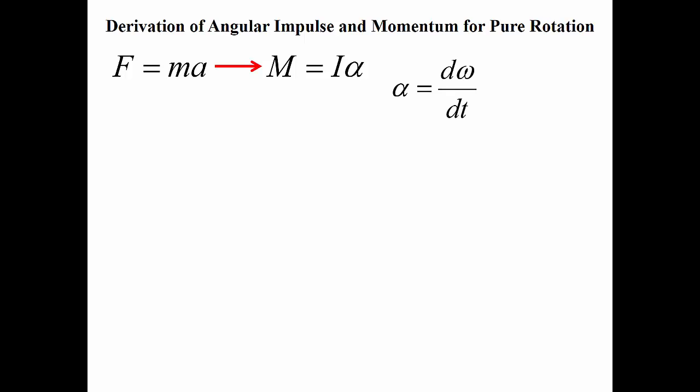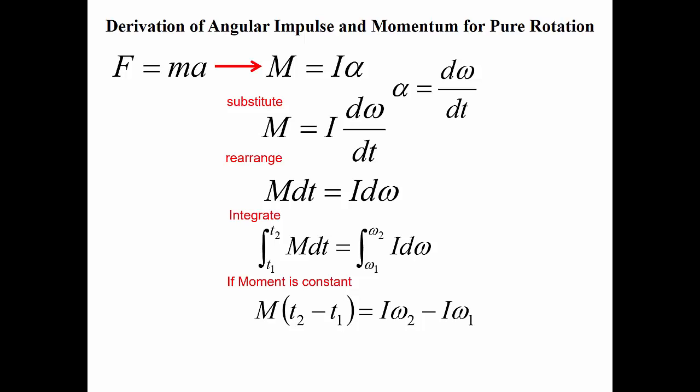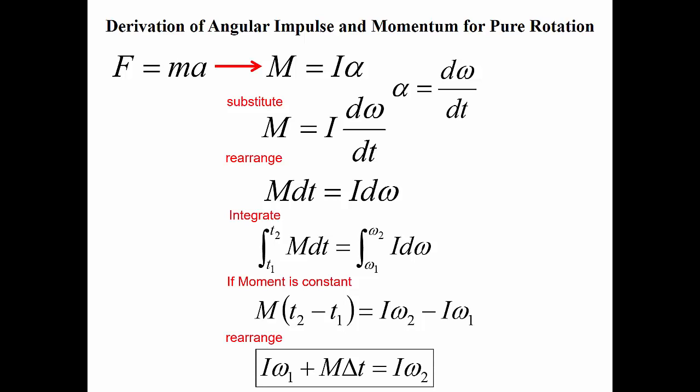Angular acceleration is equal to a change in our angular velocity with respect to time. Substituting that into our equation, and rearranging so that time goes to the side with the moment, and then integrating both sides, we end up with: moment times change in time equals mass moment of inertia times final angular velocity minus mass moment of inertia times initial angular velocity. Or rearranged: initial angular momentum plus moment times change in time equals final angular momentum.